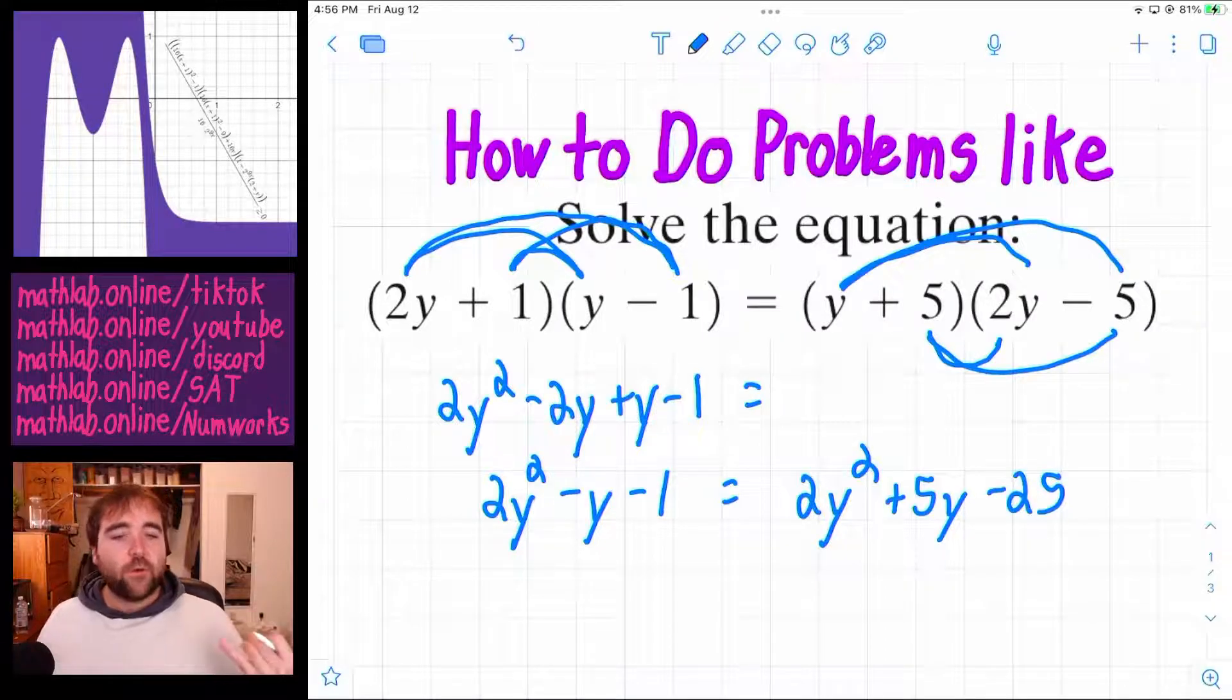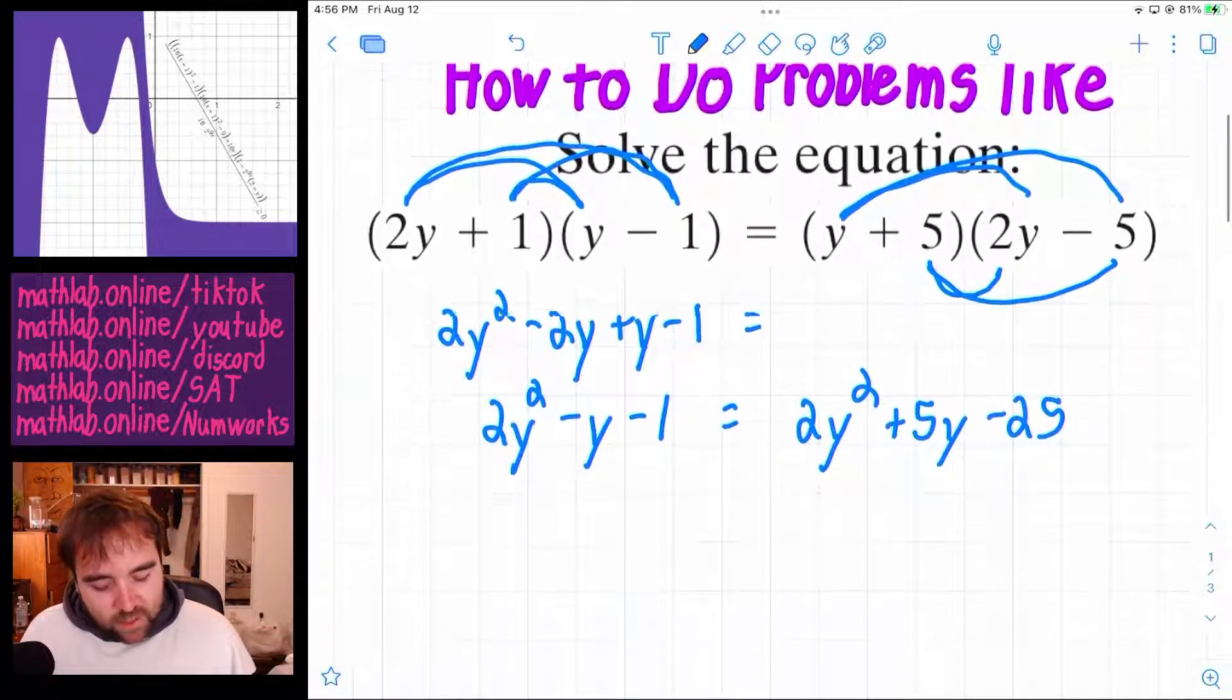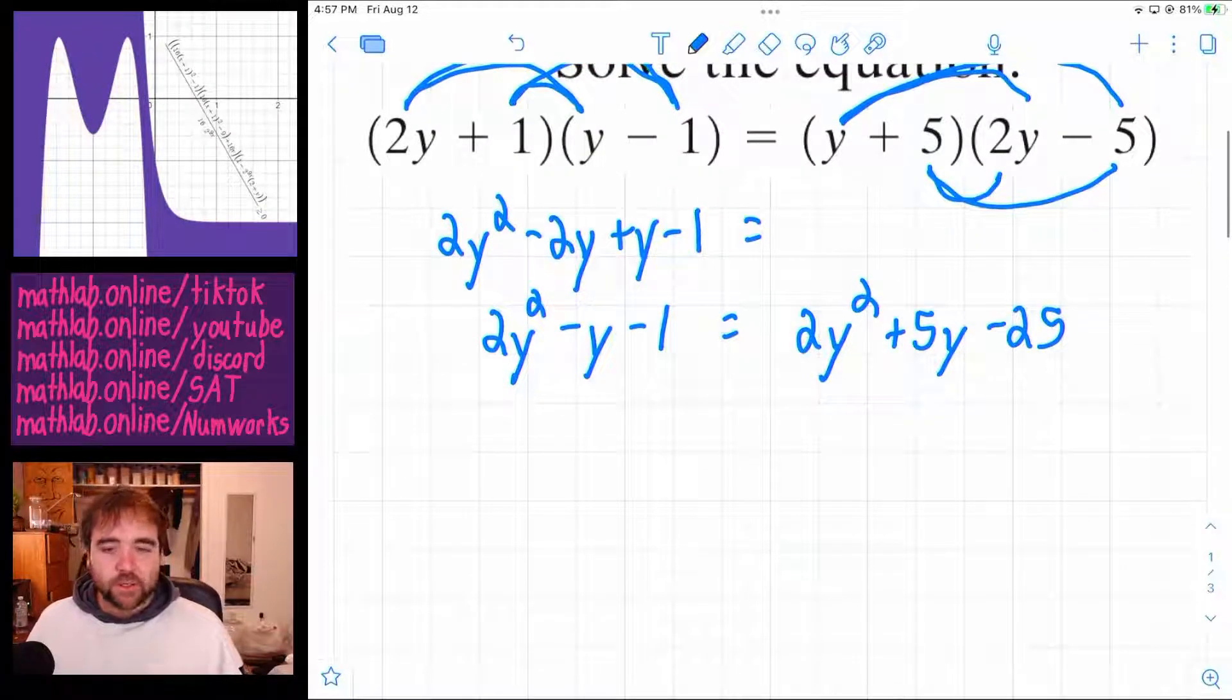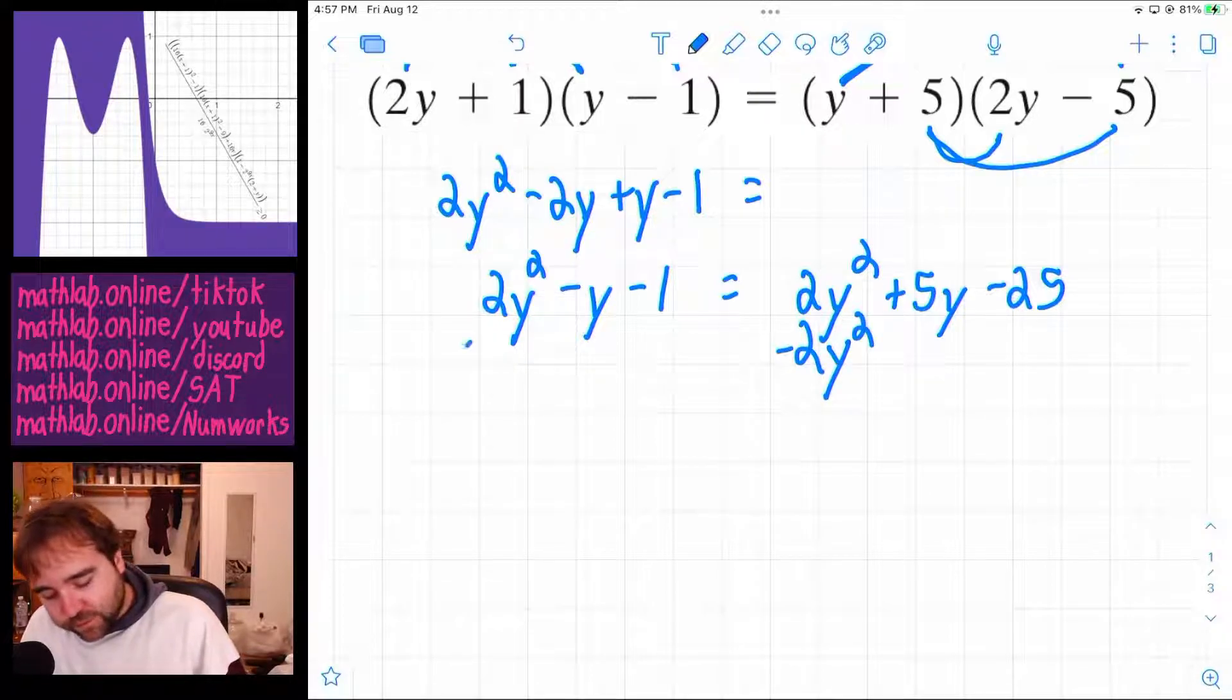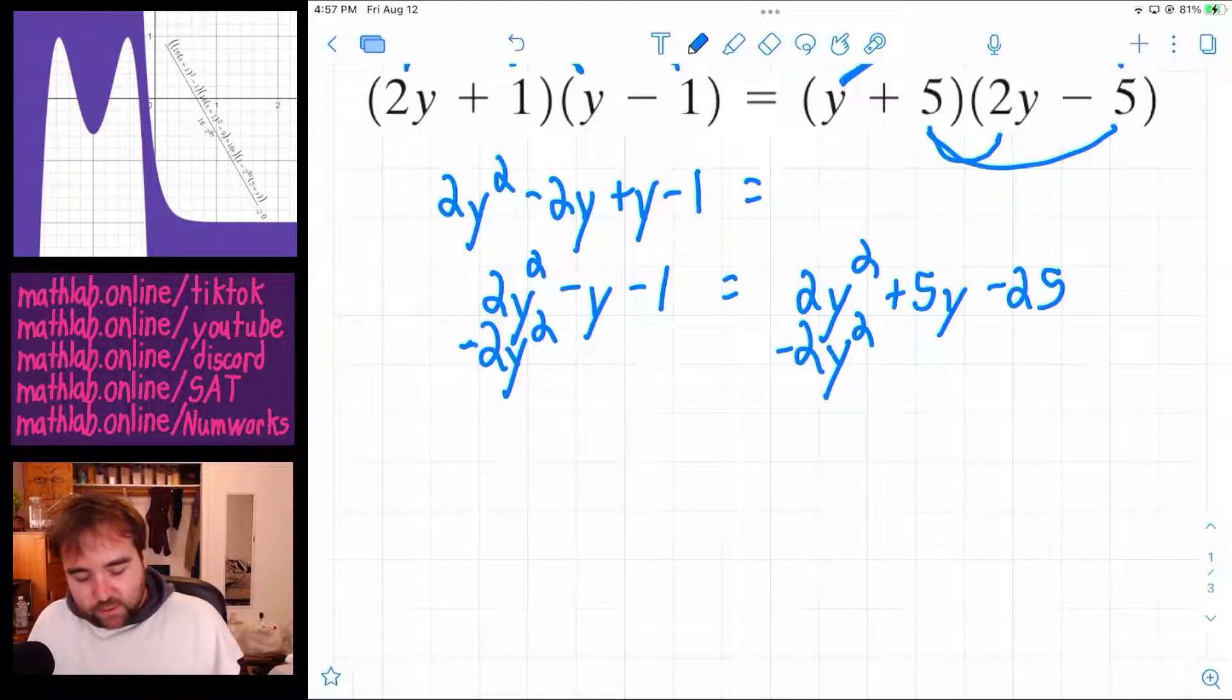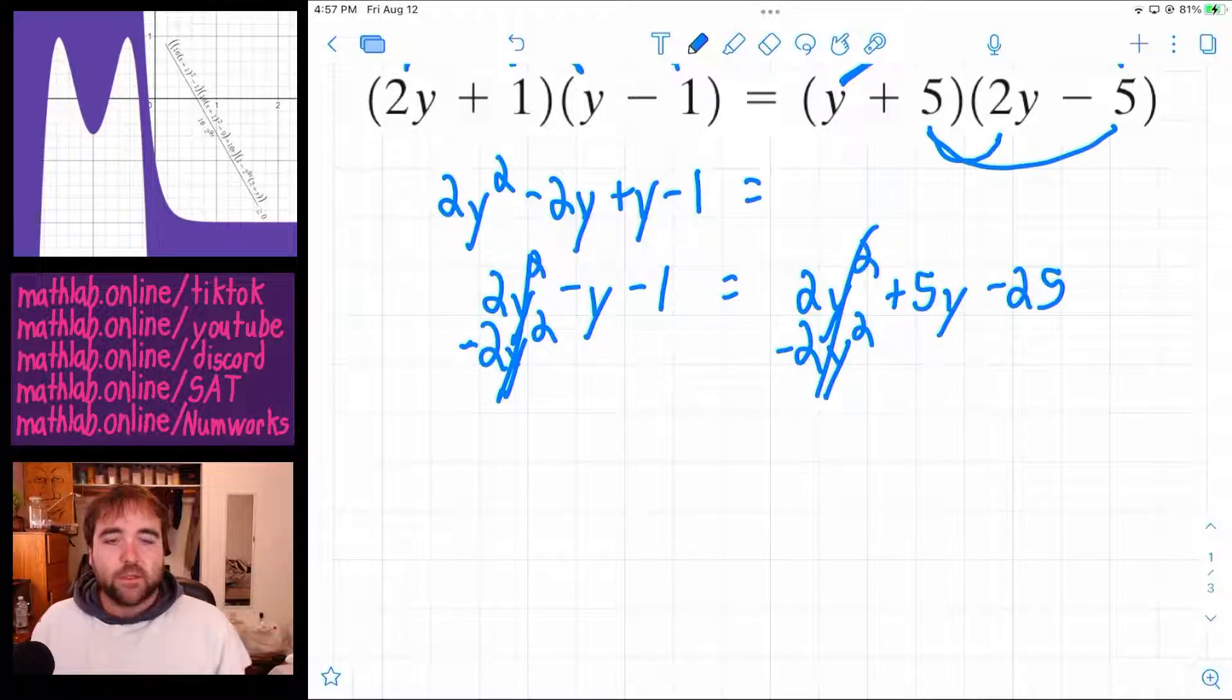And then 5 times negative 5 minus 25. So there we go. We just foiled both sides. And now we can combine like terms. This won't always happen, but these problems right now are just designed to where this happens. Look how there's a 2y squared on both sides. So if we subtract 2y squared from both sides, they just go away. They just cancel out.